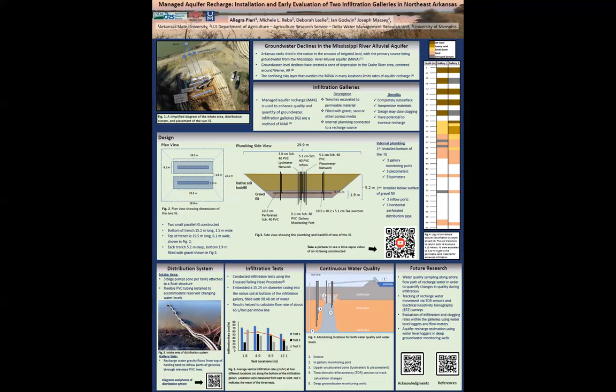Infiltration galleries are trenches excavated to permeable material, filled with gravel that recharge groundwater through internal plumbing connected to a water source. Each trench built was 5.2 meters deep, and the bottom 1.9 meters is filled with gravel.